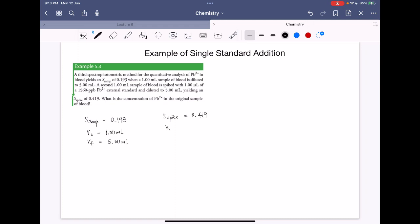So V0 in this case will be one millimeter and the V final is also five millimeters.